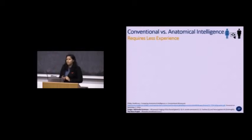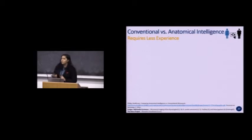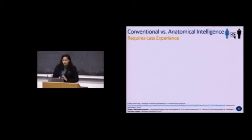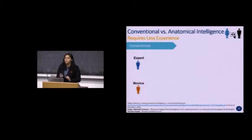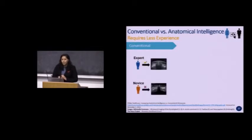Another benefit of anatomical intelligence is that it can be used effectively even by people with less experience. In conventional ultrasound, an expert — someone trained with many years of experience — would produce different images compared to a novice who is equally well trained but has fewer years of experience. Because of the difference in years of clinical use, there can be differences in how images are acquired, leading to slight differences in what the images look like.